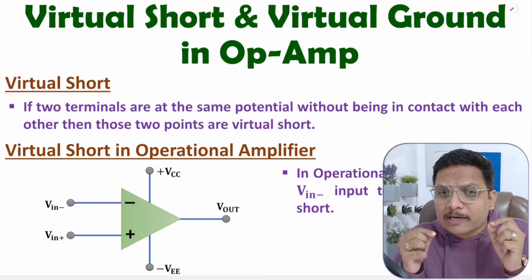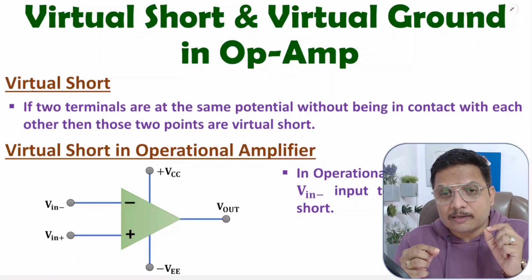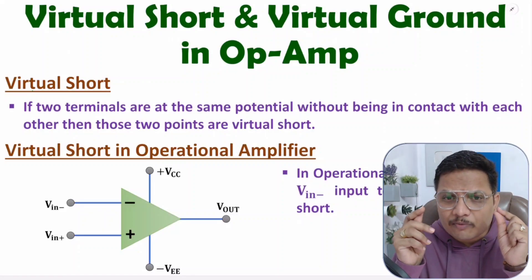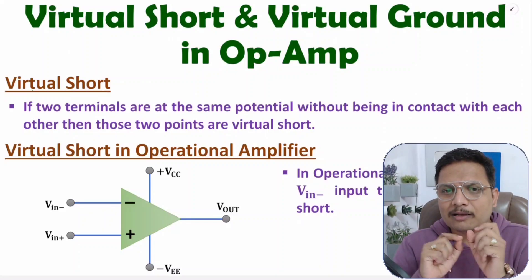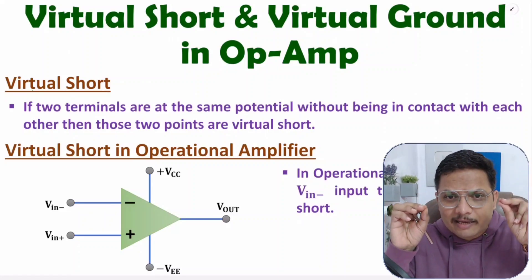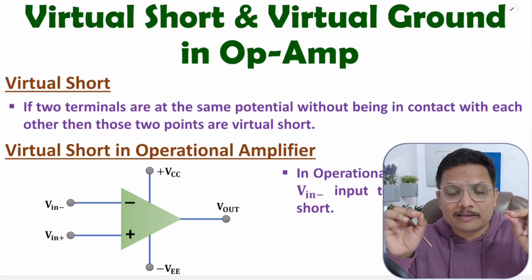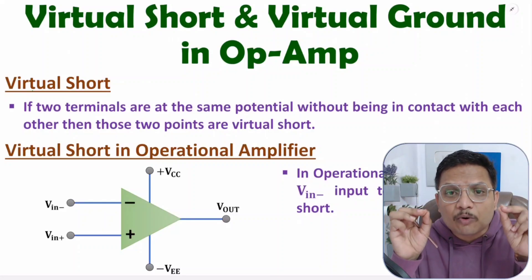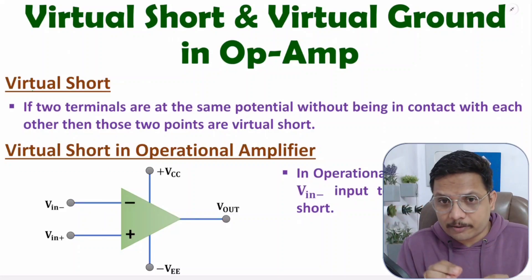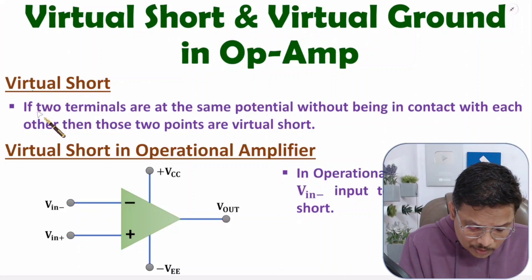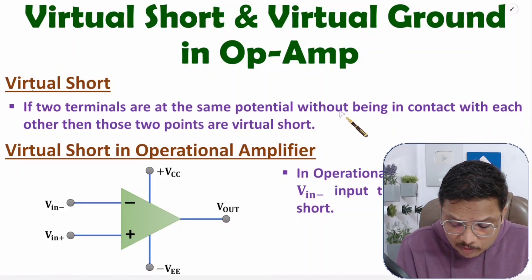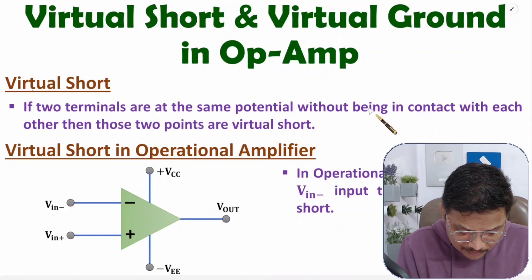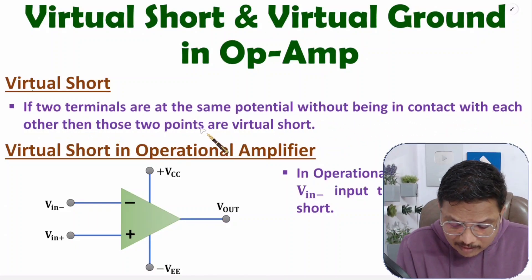So first of all you need to understand what is virtual short. Virtual short means we are having two terminals at the same potential. Let us say we have terminal A and terminal B, and if both of these terminals are having the same potential, then you can say virtually both of these terminals are short. So virtual short means if two terminals are at the same potential without being in contact with each other, then those two points are virtually short.